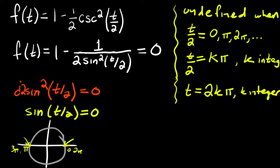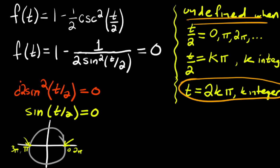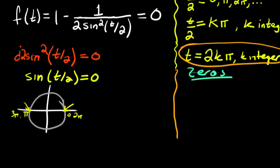So for example, t is going to be 0 at 0, and at 2 pi, 4 pi, 6 pi, and so forth. That's when the function is undefined. Now for the zeros, we need to do a little more work. We've got this expression, and let's try to solve it for zero. The first thing is to get rid of the fraction, so we'll multiply both sides by 2 sine squared of t over 2.